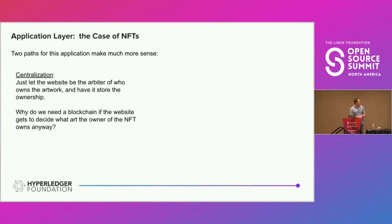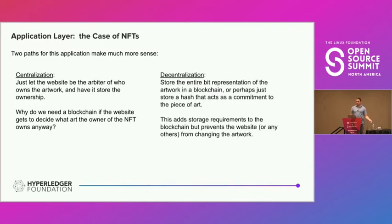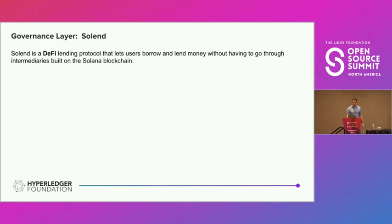Two paths make more sense: either let the website be the arbiter of who owns the artwork — register it on the website and have it store ownership, and why do we need a blockchain if the website decides anyway? Or take a more decentralized approach and store the entire bit representation of the artwork in a blockchain, maybe even just a hash. This would add storage requirements but prevent anyone from changing what the artwork represents. Watch out for false decentralization when looking at blockchain applications.